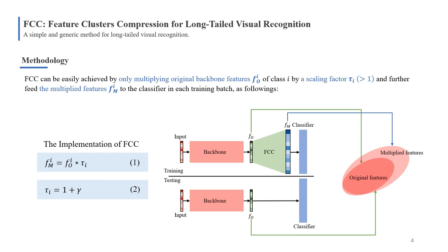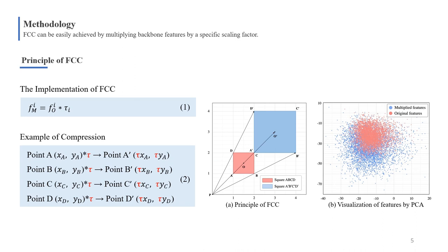In training phase, FCC only multiplies original backbone features by a scaling factor τ, and then the multiplied features are fitted to the classifier. This operation establishes a linear relationship between original and multiplied features, such that the former are mapped into denser clusters than the latter. In test, we directly fit the tightly mapped original features to the classifier.